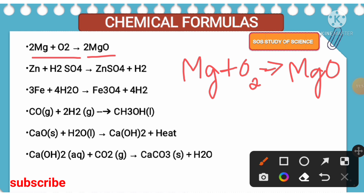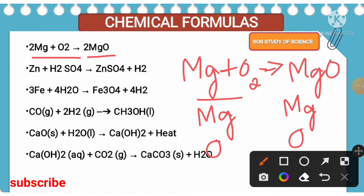First and foremost, what you are going to write is the number of elements present in the reactant side as well as in the product, and elements in the reactant will be same in the product also. So now there is magnesium and also oxygen in the reactant side. Similarly, in the product side there is magnesium and also oxygen. Now it is time to write the number of atoms present in both reactant as well as product. Look at magnesium — there is only one atom of magnesium. When we look at oxygen, there are two atoms of oxygen. Similarly, in the product side there is one magnesium atom and one oxygen atom. Now it is time to balance.